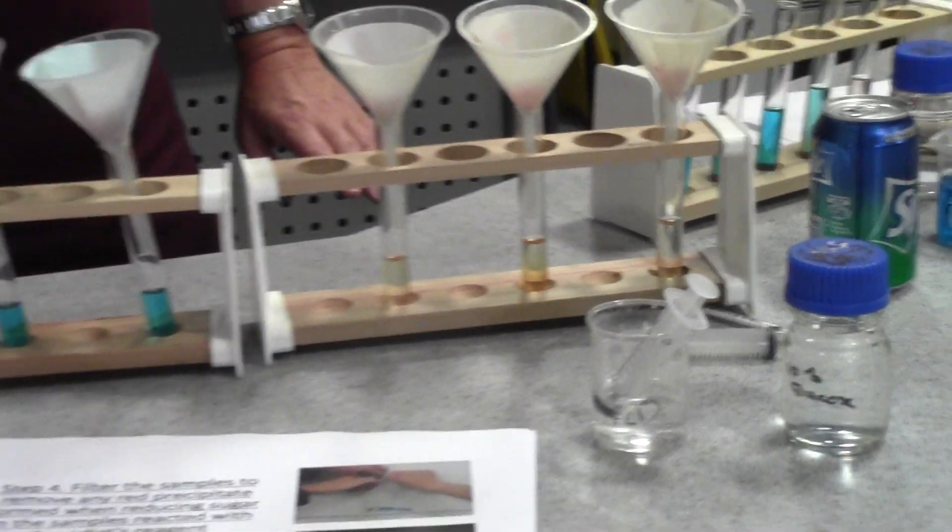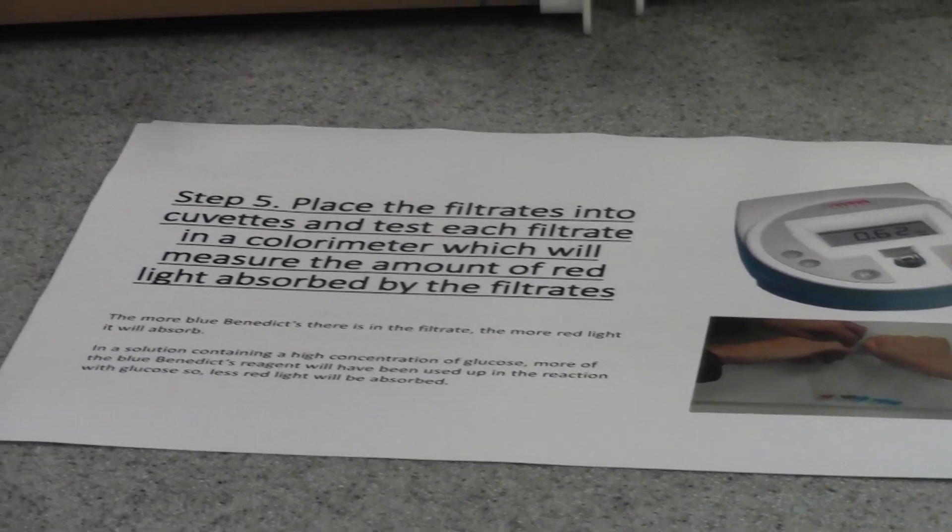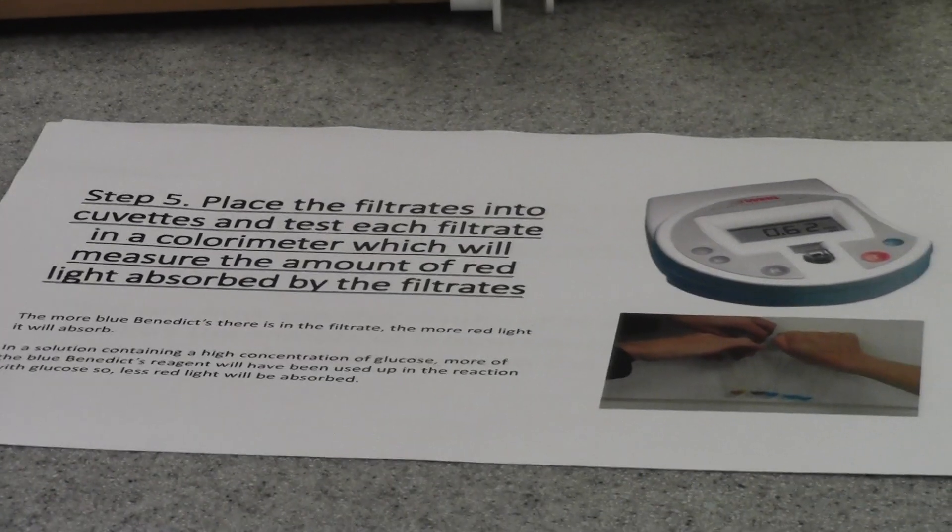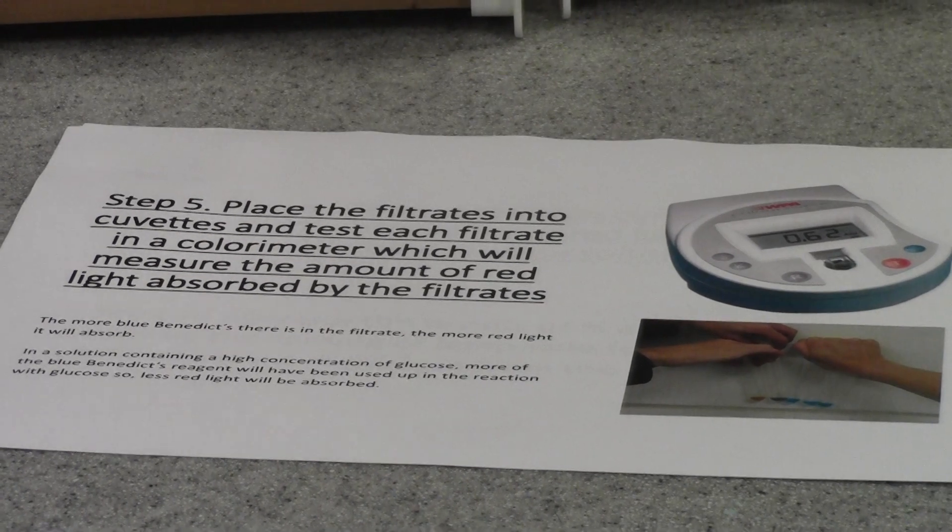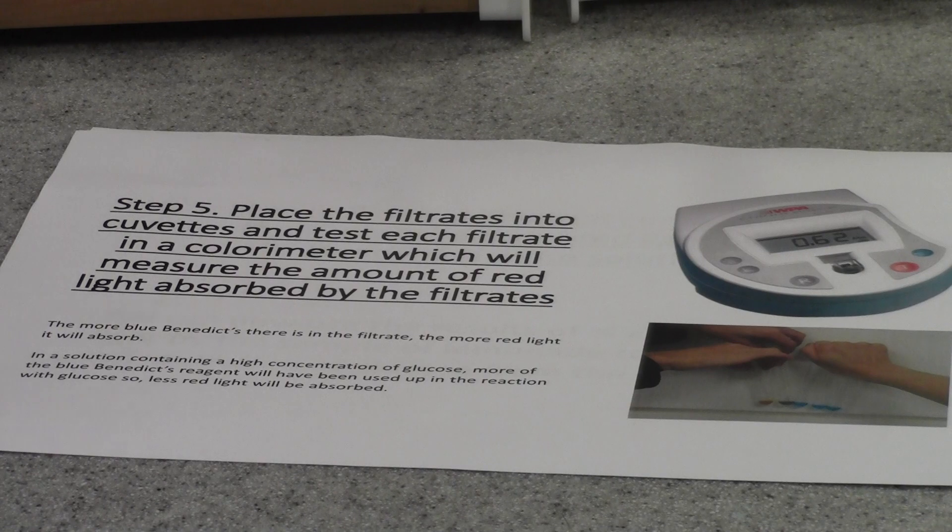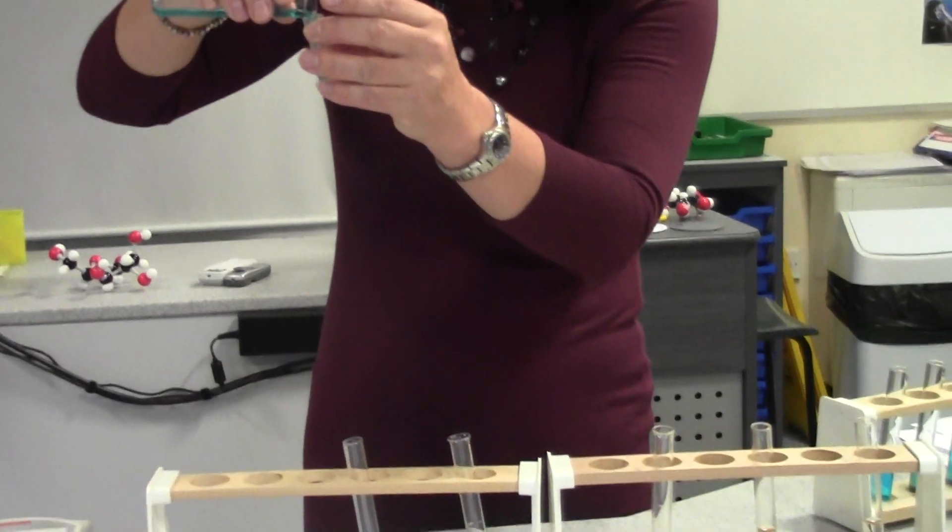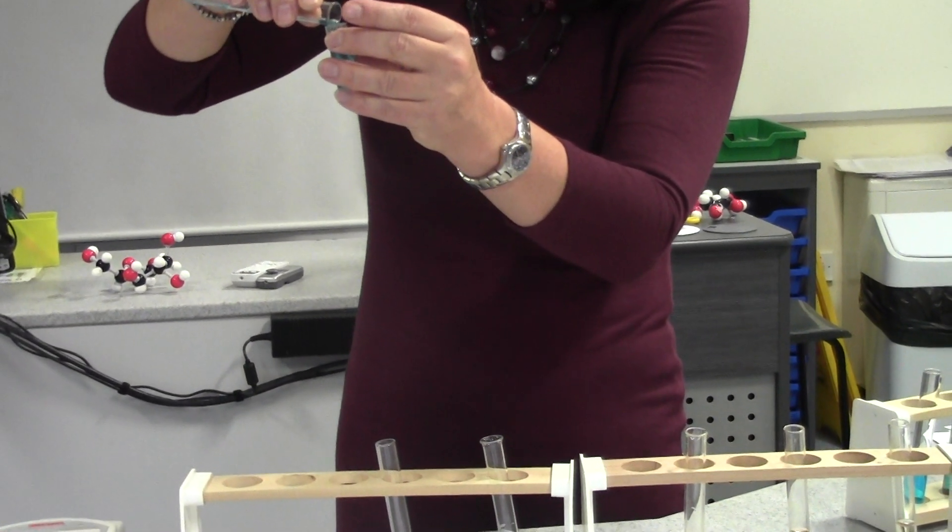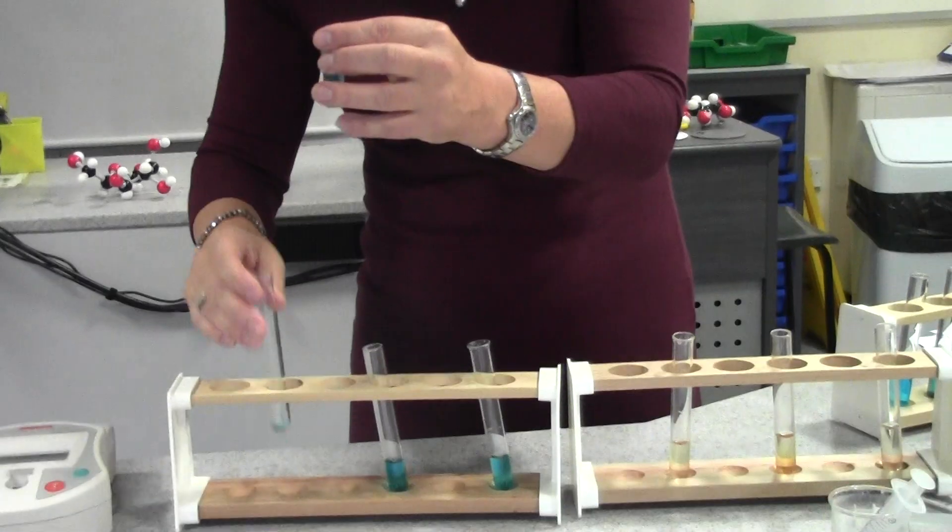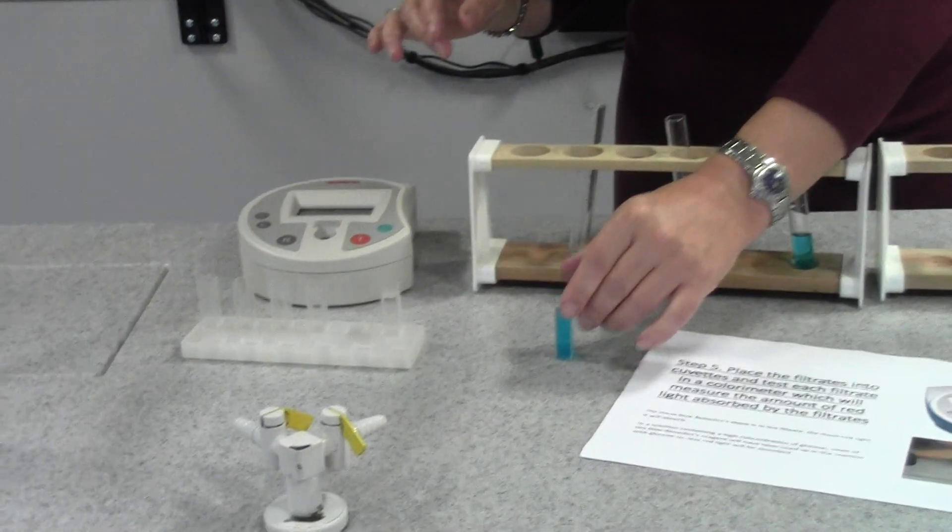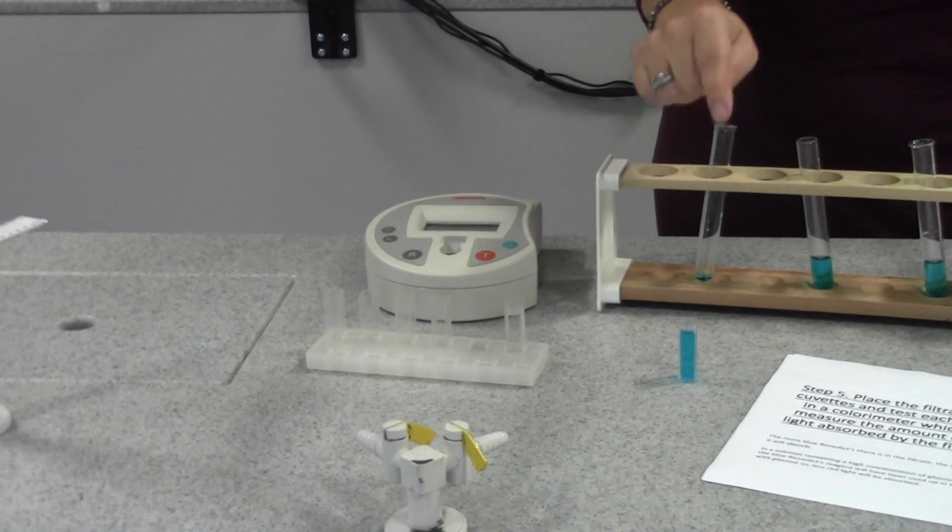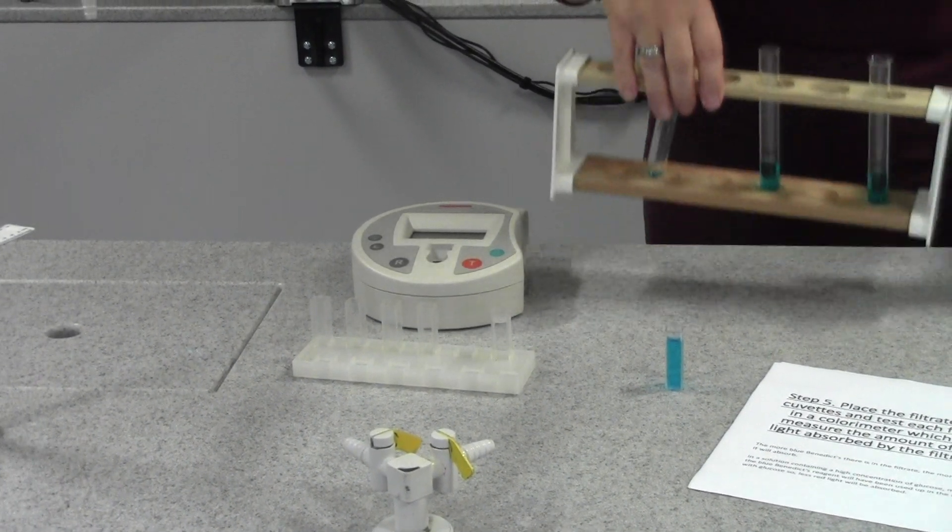The next step is that we're actually going to take these solutions—so if I remove the filter funnels there—and we're going to place them in these small plastic vials which are called cuvettes. So I'm going to fill a cuvette with my first solution, the filtrate. I'm going to use a device called a colorimeter now to measure how blue that is, so let me move these out of the way and show you the colorimeter.